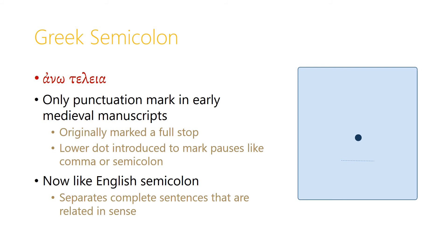The Greek semicolon is called the 'anotelia'. This is the only punctuation mark that was probably used at the time of the New Testament and shows up in the earliest medieval manuscripts. It originally marked a full stop, like our modern period. A lower dot was then introduced to mark pauses, like our modern comma or English semicolon, but that lower dot later became the period. So now the anotelia, the higher dot, is used like an English semicolon — it separates complete sentences that are related in sense.